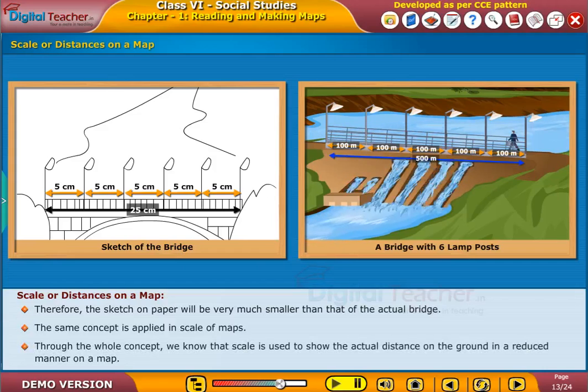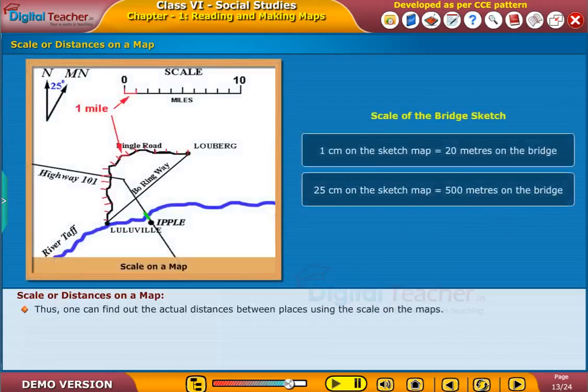Through this concept, we know that scale is used to show the actual distance on the ground in a reduced manner on a map. Thus, one can find out the actual distances between places using the scale on the maps.